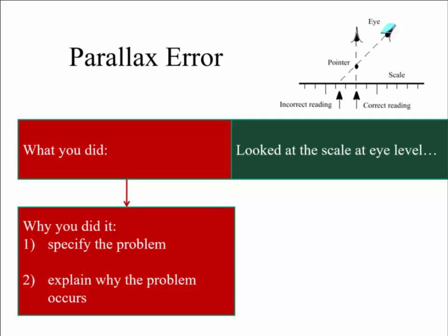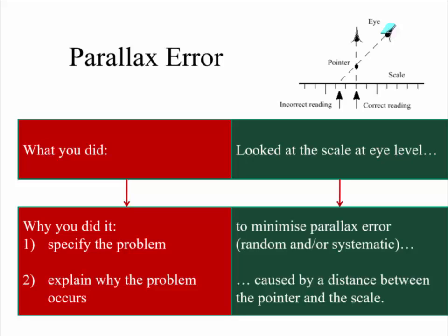So when we talk about parallax error, we want to look at the scale at eye level, or have the scale at eye level, and we want to do that because we want to minimize the parallax error, so it could be random or systematic, depending on whether you're consistently to one side or not, and that parallax error is caused by the distance between the pointer and the scale. So that's something you might write down when you were describing what you did for this technique to reduce systematic and random error.